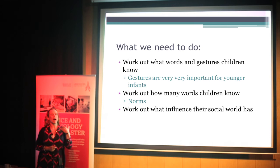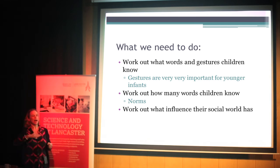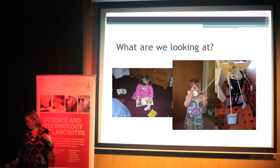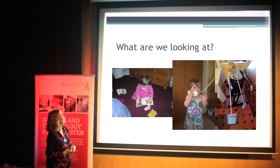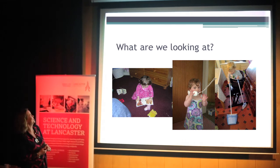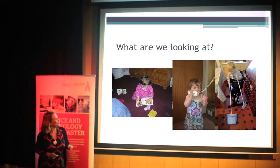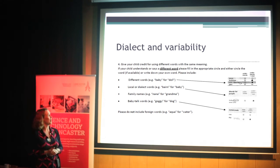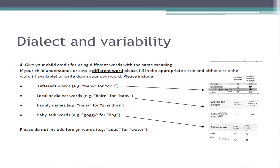We also want to work out what's the influence of the child's social world on their language development. Some of the things we're looking at in our gesture questionnaire include: can your child pretend to read a book, does your child pretend to talk on the phone, does your child pretend to sweep up? In our UK-wide study we're also looking at dialect and variability — making sure we get the right answers on things like dialect words. For example, 'burn' versus 'win' — do they use a dialect word, a different word, or a baby word like 'gog' or 'goggy' instead of 'dog'? We need to reflect the dialect variability within the UK.